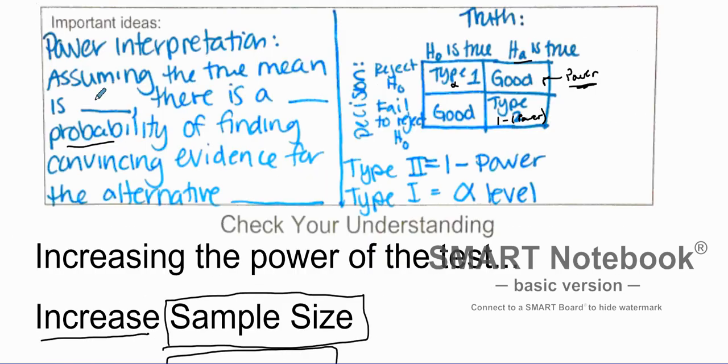So when we talk about power of the test, assuming the true mean is whatever you found for your test, assuming that is true, there is a probability of finding convincing evidence for the alternative, whatever the alternative hypothesis is. That is the power of the test. Assuming that the true mean of the statistic is true, there is a probability of finding convincing evidence for that. We know how to increase the power of the test. I hope this helps you out in answering some problems about power.